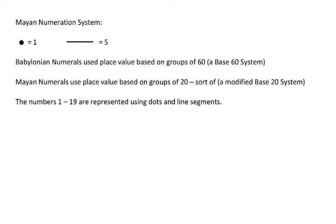First of all, they used two basic symbols, a dot to represent one and a line segment to represent five. If you remember back to the Babylonians, Babylonian numerals used a place value system based on groups of 60. So the analogy I used is, suppose you have a huge field of sheep and you want to count them.